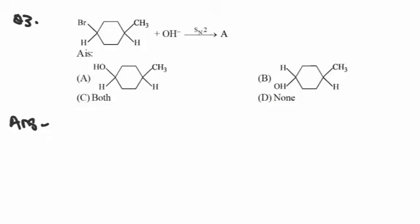This question involves the concept that SN2 involves inversion — it depends only on this concept. If OH is the strong nucleophile in SN2, it attacks on the opposite side to Br. So CH3 is on top and H is on top. What will Br on the opposite side mean?